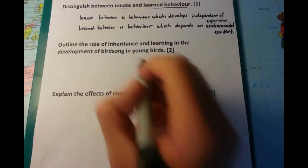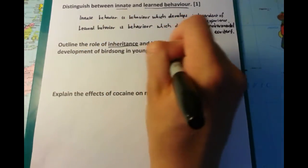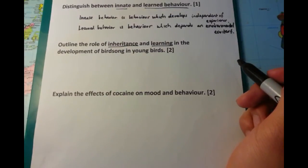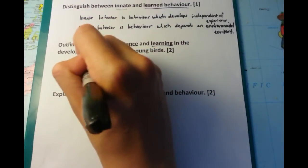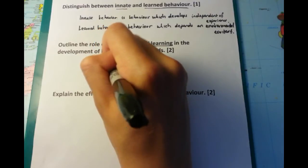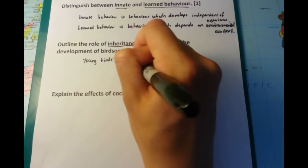The first point is about inheritance. Young birds inherit a basic form of birdsong which is innate — it develops independent of experience. The birds are born with that birdsong.